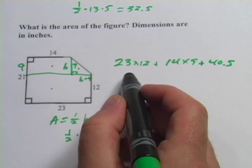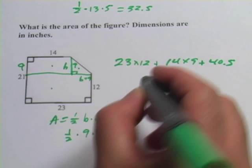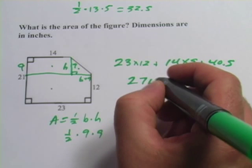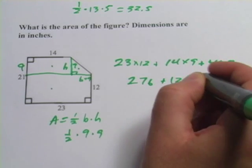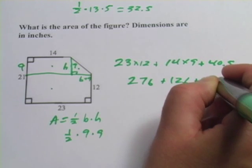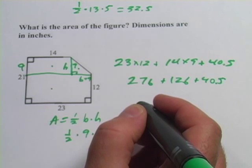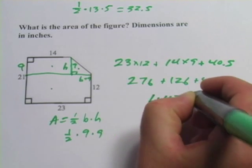Now we can do the rest of the math and add all these together, so 23 times 12 is 276, 14 times 9 is 126, and then we have our 40.5. Add all those together, and you get 442.5.